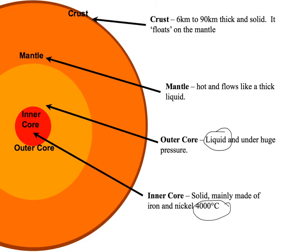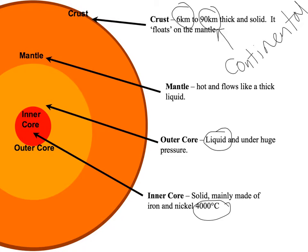The crust is our top layer. It's by far the thinnest layer of the earth, and it is six kilometers to 90 kilometers thick in some places. It's solid, and we say that it kind of floats on the mantle. The thickest part of the crust is going to be the continental, and the thinnest part of the crust is the oceanic.